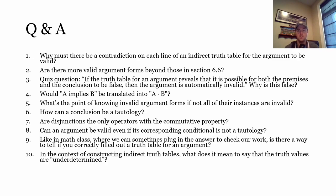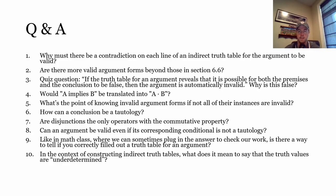Q4: Would 'A implies B' be translated as A dot B? No — 'A implies B' translates to A ⊃ B (A horseshoe B). The horseshoe represents material implication. If a statement involves implication, like 'A implies B,' that's a good indication you need the horseshoe. It's similar to 'if A then B.'